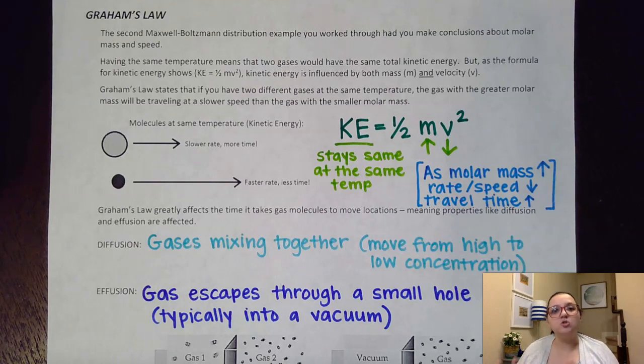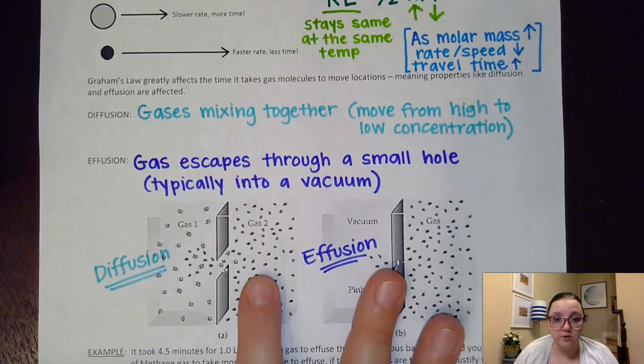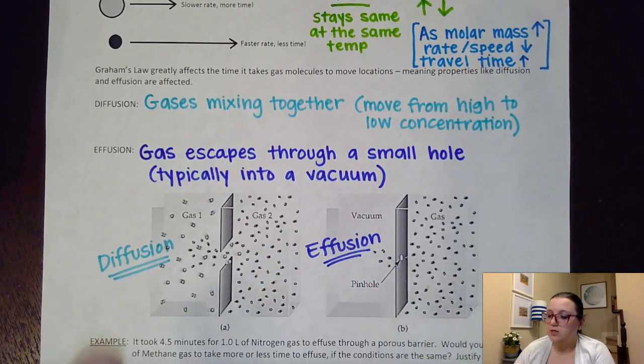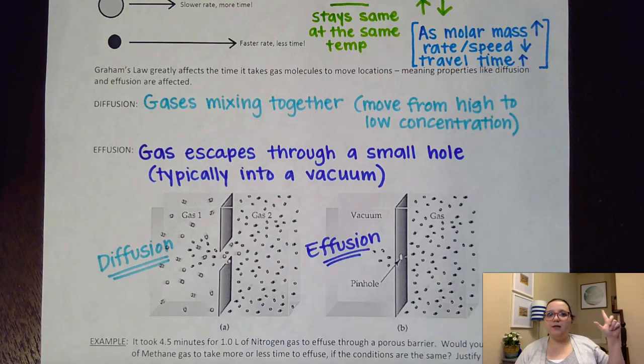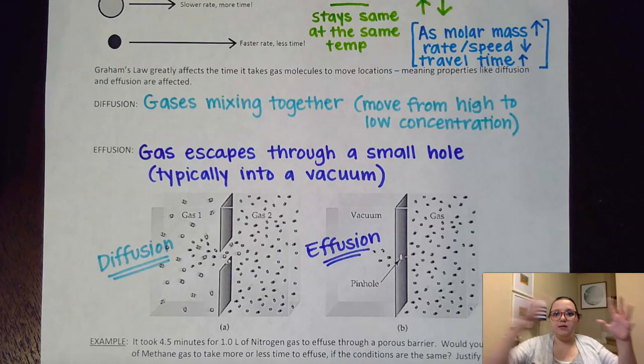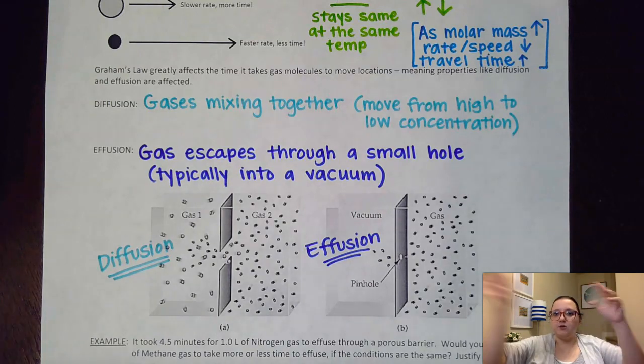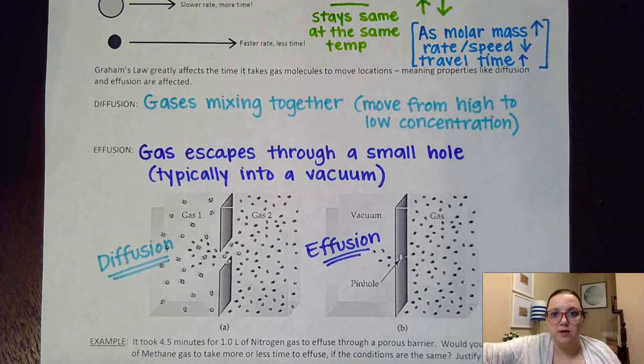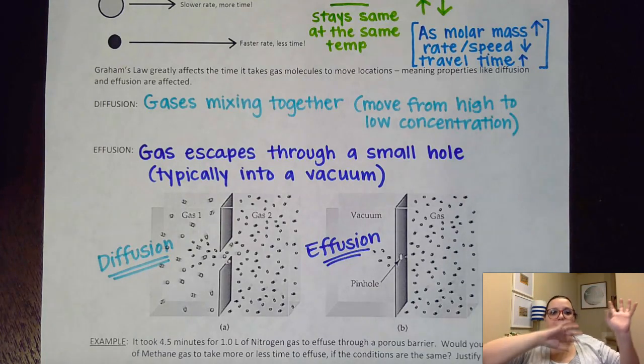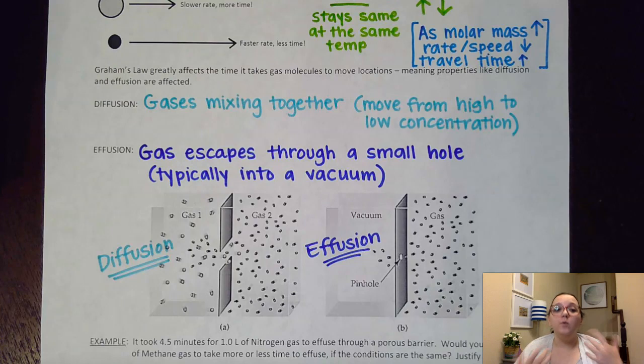Now, this affects two different gas situations that we can have, diffusion and effusion. Diffusion is when gases mix together. So like, for example, if I spray some air freshener on one side of the room, the time it takes for that air freshener to mix with the rest of the air and for you to be able to smell it on the other side of the room, that mixing of that air freshener would be diffusion.